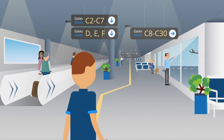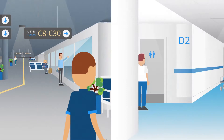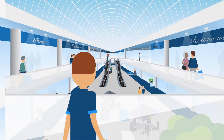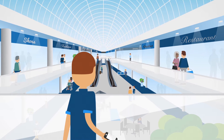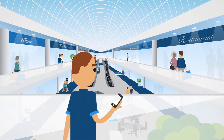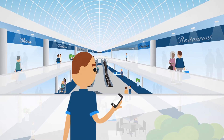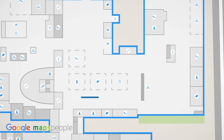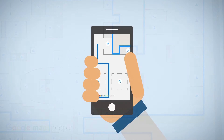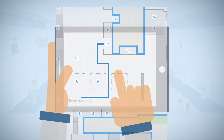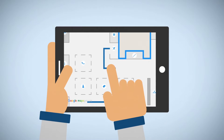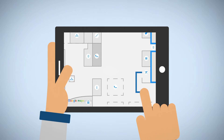At large complex venues such as airports, hospitals, or shopping centers, it can sometimes be difficult to find the things you're looking for. Indoor wayfinding maps in mobile apps, info stands, and on websites make it easier for visitors to find anything from shops to restrooms.